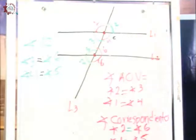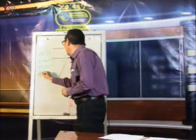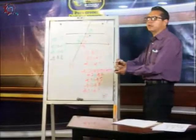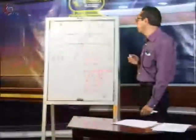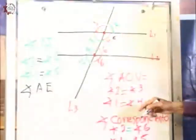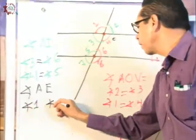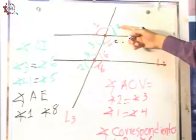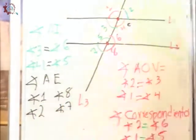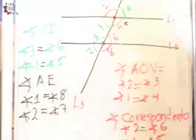Ángulos alternos externos. Si los internos estaban adentro de las paralelas, los externos están afuera de las paralelas y también se cruzan. Será el ángulo uno con el ángulo ocho, y el ángulo dos con el ángulo siete. También tienen la misma característica: son iguales, miden exactamente lo mismo.